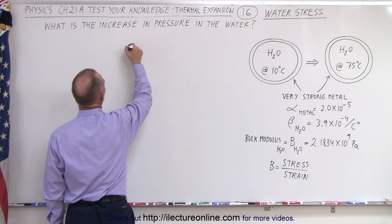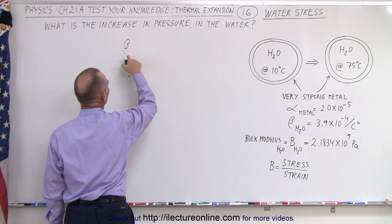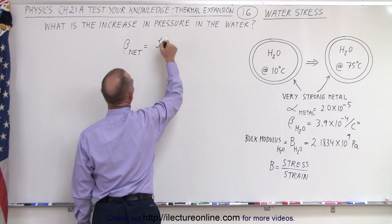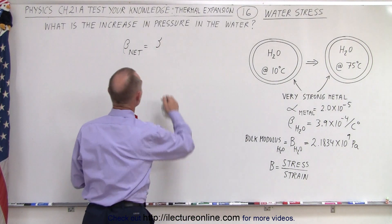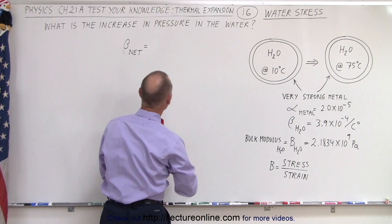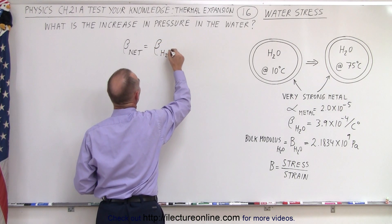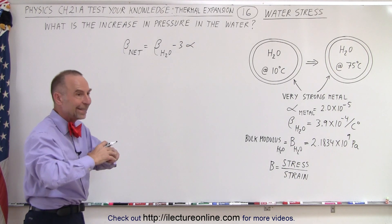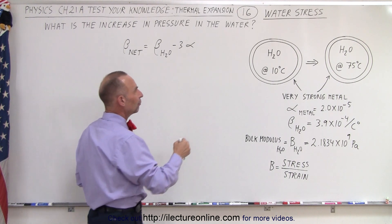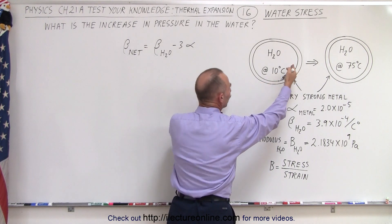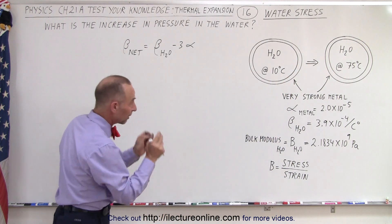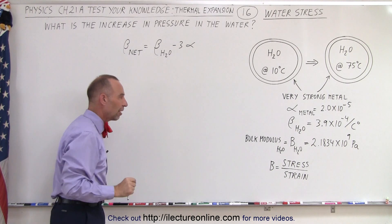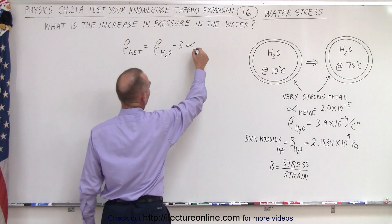What we're going to do is take the net coefficient of volume expansion. That's going to be equal to the volume expansion coefficient for the water minus three times the linear coefficient of the metal. We want to find the net increase in the volume of the water minus the amount of allowable volume increase by the metal. The metal is going to increase in volume a little bit; the water is going to increase a lot. We want to find the difference, and we need to find the equivalent volume coefficient for the metal.